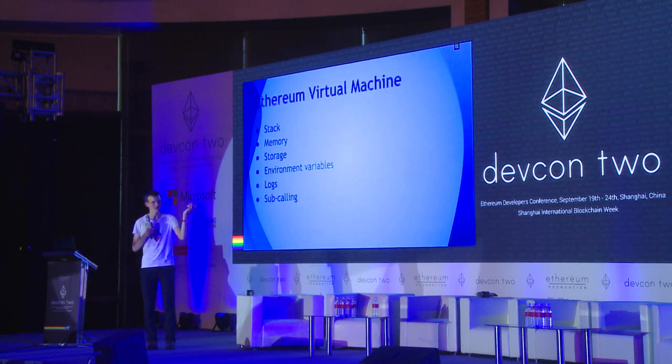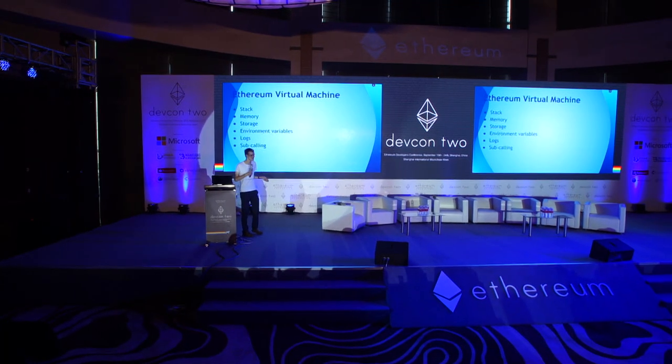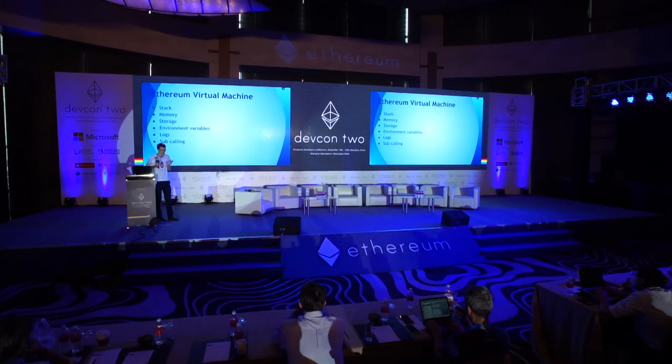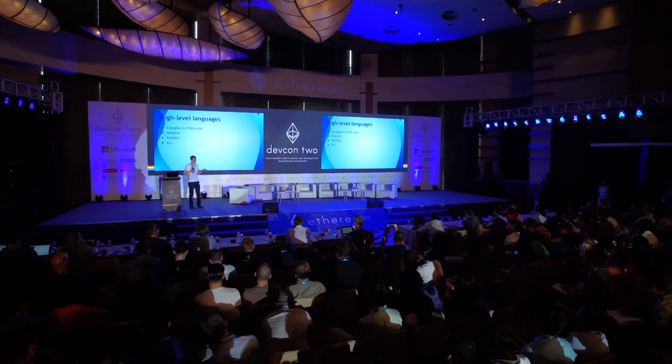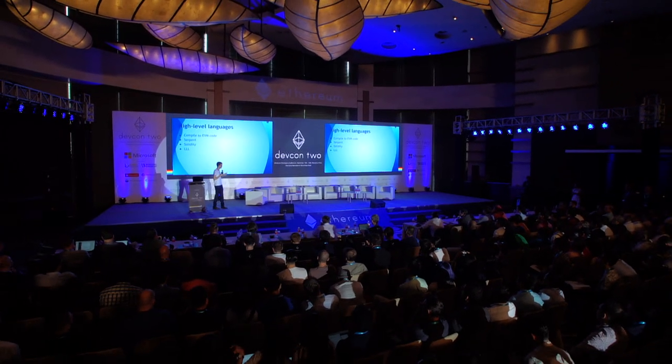The Ethereum Virtual Machine has a stack, a concept of memory, storage, and environment variables — contracts have access to things like the timestamp, which lets you have contracts that say if the time is greater than January 1st 2018, do something. In general, if you're a contract writer, you're not going to write in EVM code directly. You'll write in higher-level languages: Solidity is the most well-supported right now, you can also write in Serpent, and there's something called LLL. You write your code in these languages and it compiles down to EVM bytecode — readable at the high level, compact and fast-executed on the blockchain.